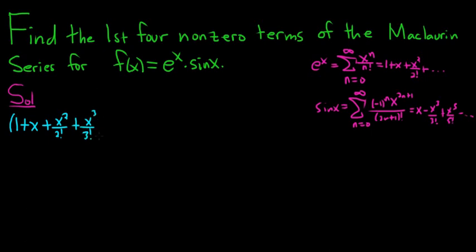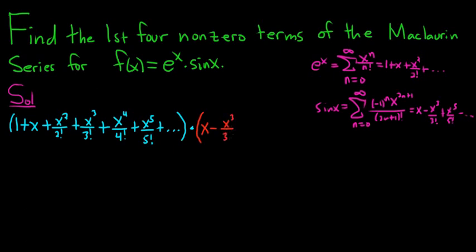How far do we go? I have a feeling we might need to go all the way to the fifth power. So I'll include x to the fifth over 5 factorial plus dot dot dot. That's the Maclaurin series for e to the x. This is being multiplied by the Maclaurin series for sine x. Sine x starts with x, then it's minus x cubed over 3 factorial, and since sine alternates, it's plus x to the fifth over 5 factorial, and the next one would be minus x to the 7 over 7 factorial, plus dot dot dot.